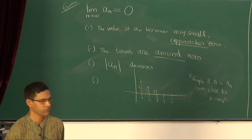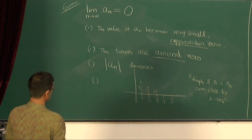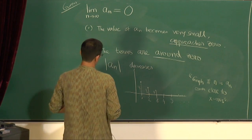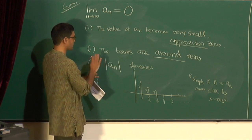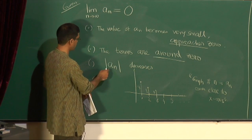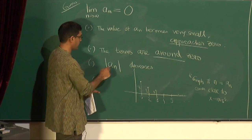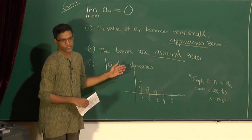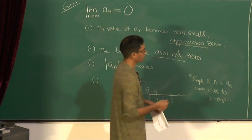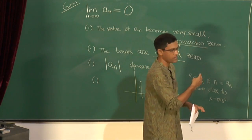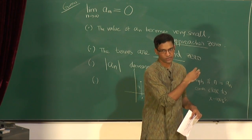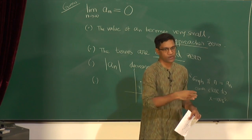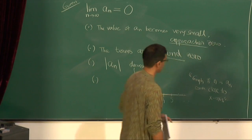There is this whole notion of closeness, 'around', 'approach', and so on. Does it always need to happen that the sequence decreases when the limit is 0? For instance, we wrote the sequence 1/n, which decreases: 1/2, 1/3, 1/4, and so on to 0. But is that always a necessity? Can you think of sequences where the absolute value doesn't decrease?